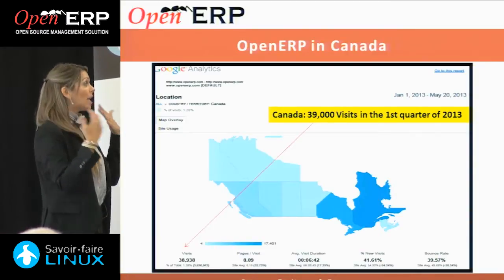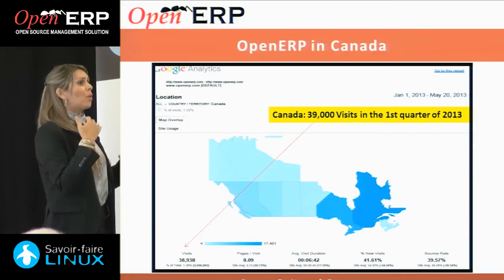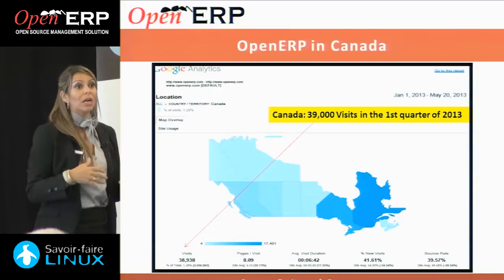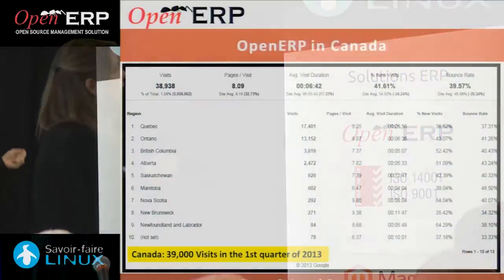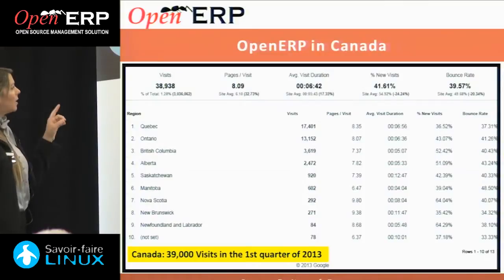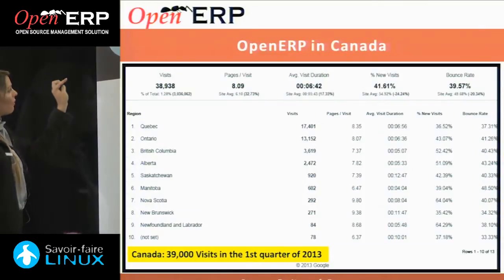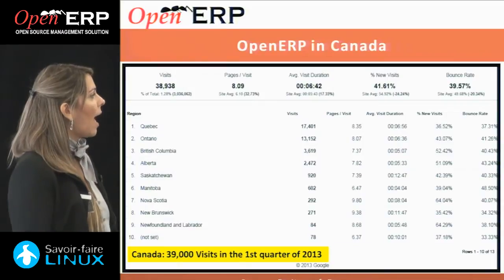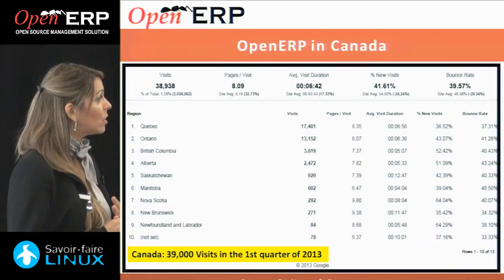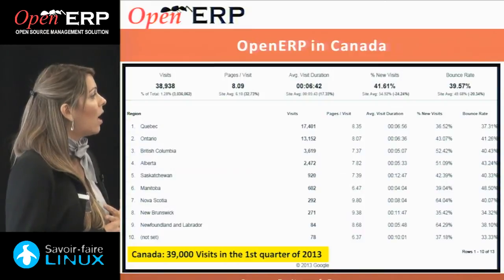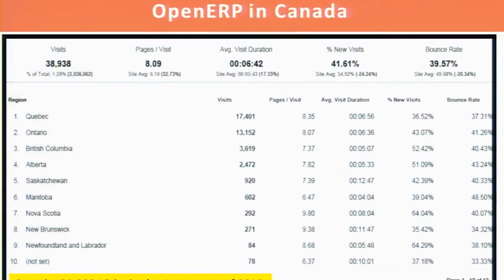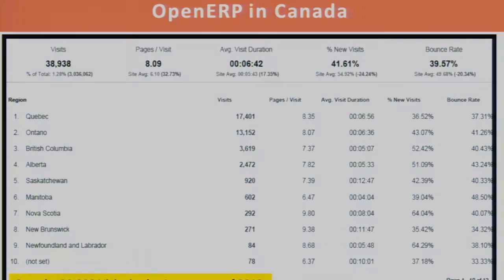This graphic shows the difference in terms of visibility here in Canada in the first quarter of 2012 versus the first quarter of 2013. It also shows the comparison of what we have done in terms of visibility before and after version 7. We had really good visibility once we launched version 7.0. Most of our visibility is located in the Quebec and Ontario areas. Just in Q1 of 2013, we had close to 39,000 visits.